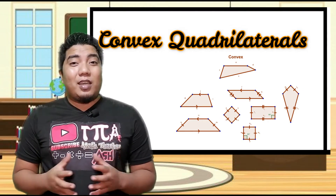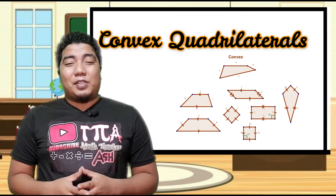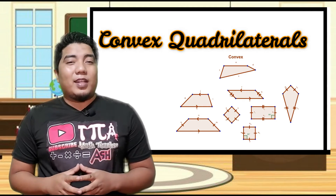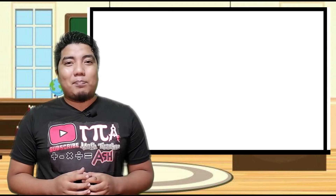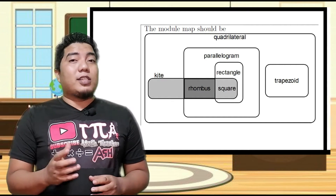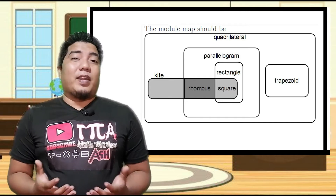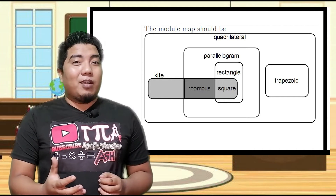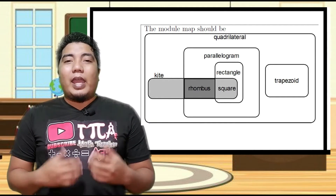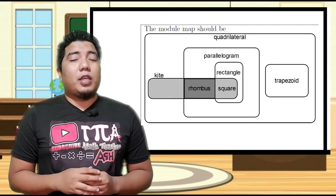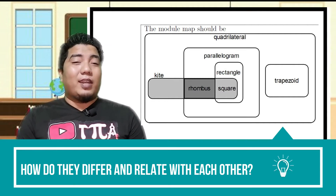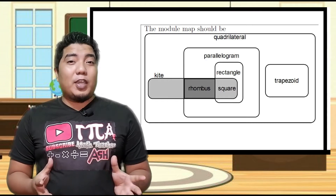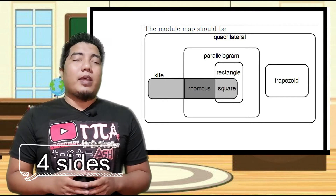These are the different kinds of quadrilaterals, and to help you know them, let me show you this concept map. As you can see, quadrilaterals come in different kinds: we have the parallelogram, the rectangle, the rhombus, the square, the kite, the trapezoid, and the isosceles trapezoid. All of these figures are under quadrilaterals, meaning they all have four sides.